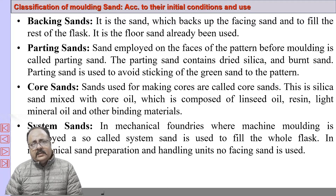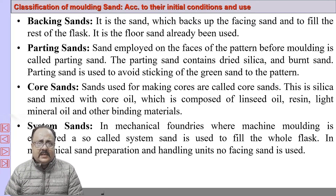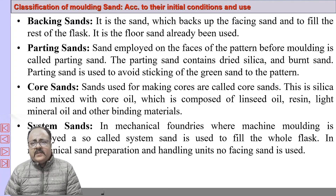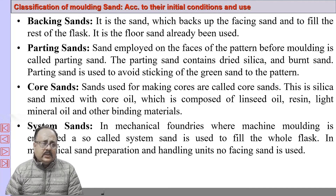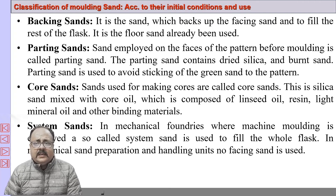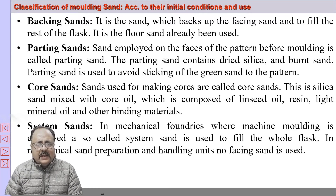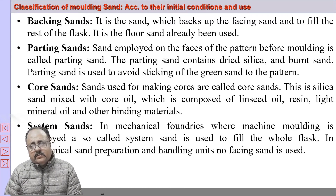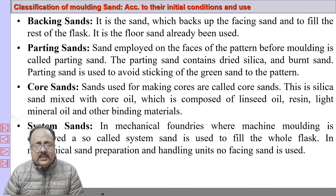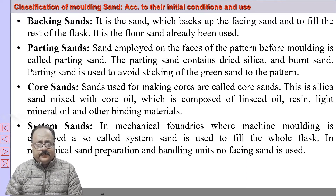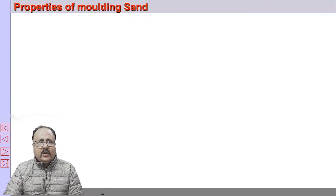Backing sand backs up the facing sand and fills the rest of the flask; it may be sand that has already been used. Parting sand is employed on the faces of the pattern before molding and consists of dry silica and burnt sand; it is used to avoid sticking of the green sand to the pattern. Core sand is used for core-making and consists of silica mixed with core oil — a mixture of linseed oil, resin, light mineral oil, and other binding materials. System sand is used in mechanical foundries where machine molding is employed and fills the entire flask.